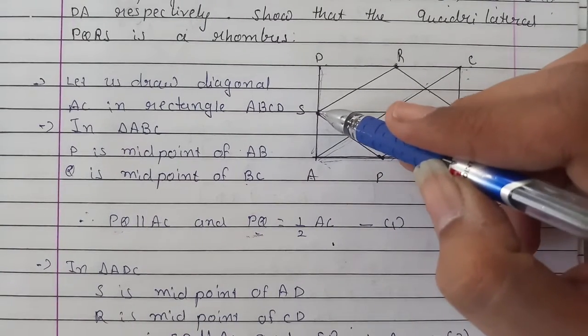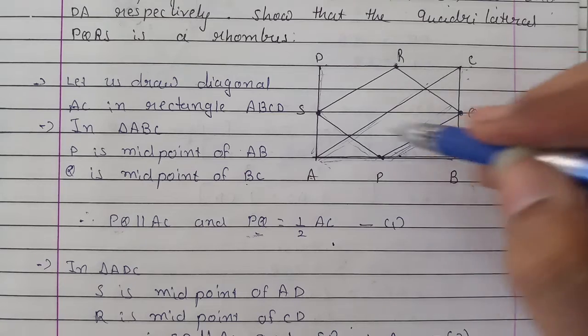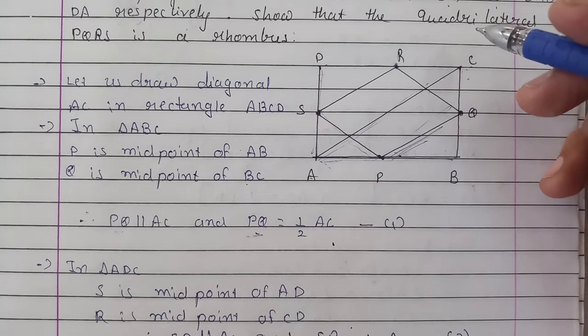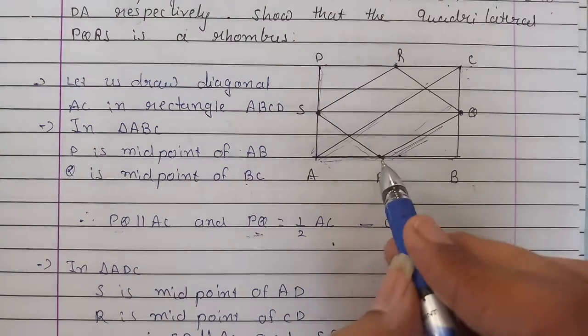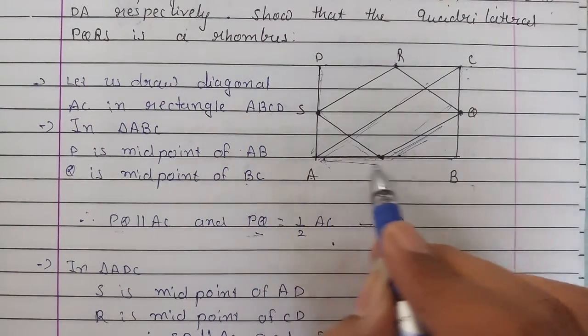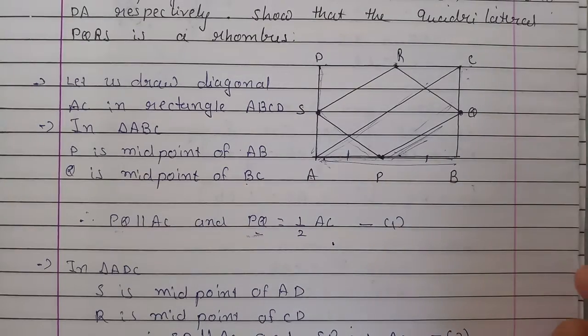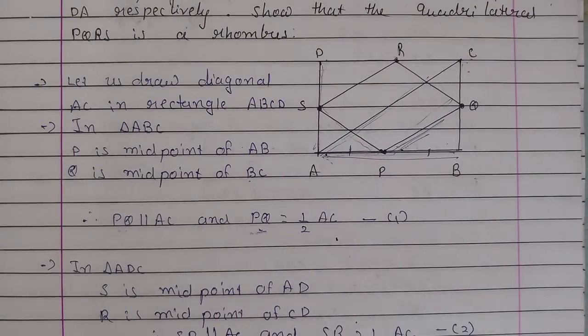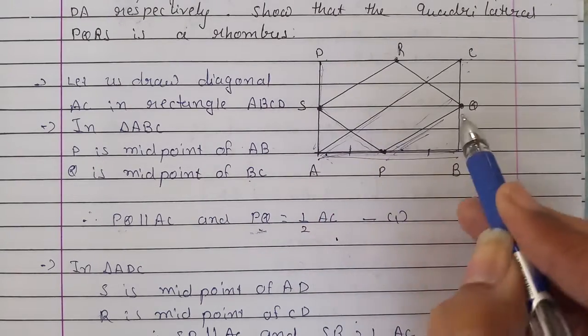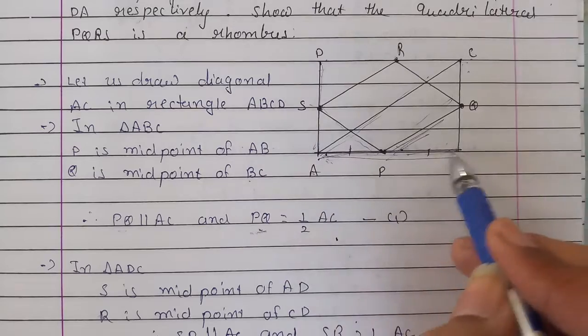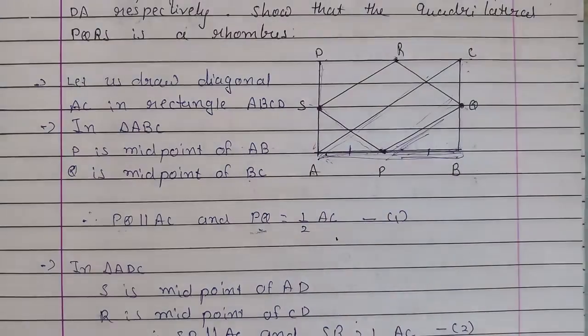And if we have two adjacent sides equal, this parallelogram will be a rhombus. For that, we have P as midpoint of AB. This is AP and PB. So we will consider the triangle APS and BPQ.